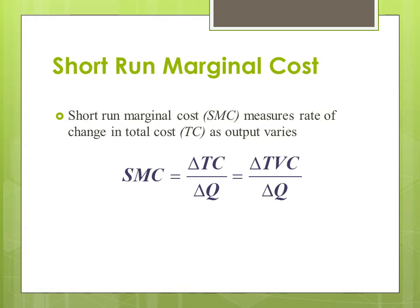Next is short run marginal cost. Short run marginal cost is the rate of change in total cost as output varies. So short run marginal cost equals the change in total cost due to a change in output. It is also equal to the change in total variable cost, because our total fixed cost is fixed — there is no change in total fixed cost, that's why marginal cost also equals the change in total variable cost.